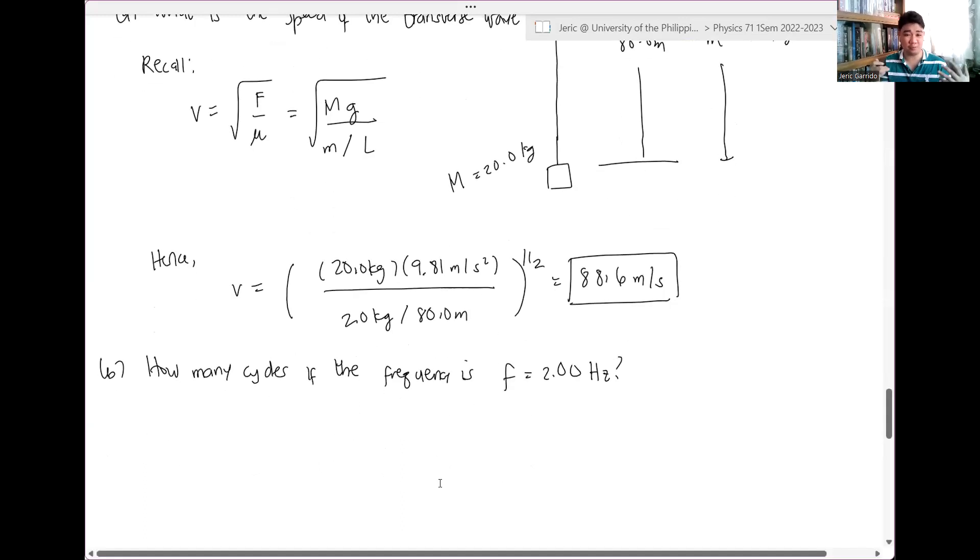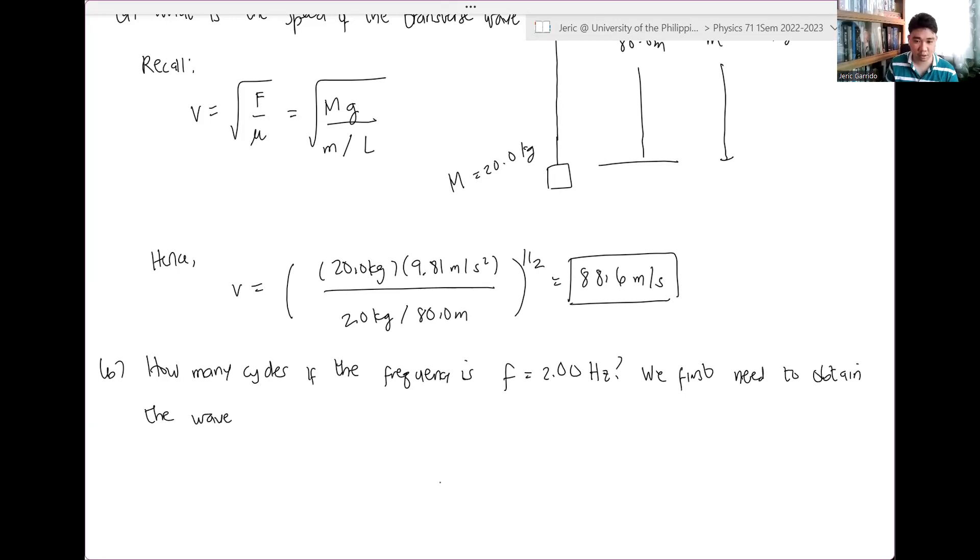Remember, you have the velocity, v, and you have the frequency, F. Ano yung kailangan natin hanapin? Kung gusto natin bilangin yung number of cycles, kailangan alam natin gaano kalaki or gaano kahaba yung isang cycle. Diba? Therefore, we first need to obtain the wavelength of the wave. So, in that case, the wavelength, therefore, is just equal to what?